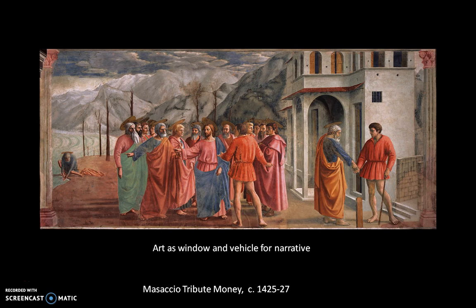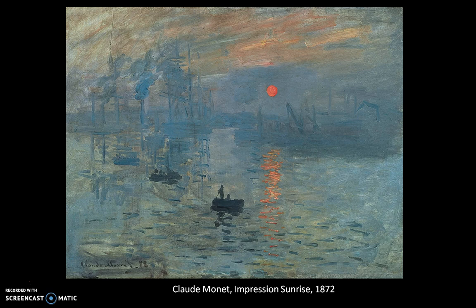Art historians are interested in how and why things change. Someone studying Masaccio might ask why patrons — people who pay for art — suddenly found this type of art valuable, especially in a public context. Now, if we jump abruptly from around 1425–27 to 1872 and Claude Monet's famous Impression Sunrise, we can see that a number of important things have changed. Superficially, this is an easel painting on canvas painted in plein air — outdoors.